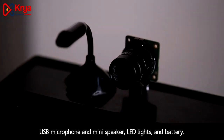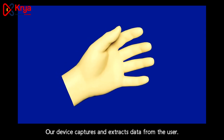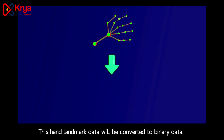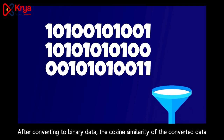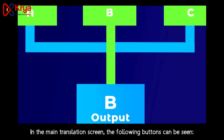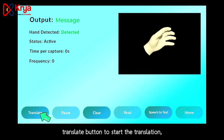The system consists of a 12-megapixel camera, screen display, USB microphone, mini speaker, LED lights, and buttons. Our device captures and extracts hand landmark data from the user. This data is converted to binary data, after which the cosine similarity of the converted data and each entry from the dataset is tested. The data with the highest value will be the output on the screen.